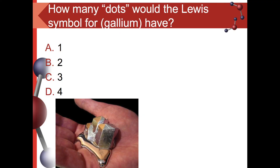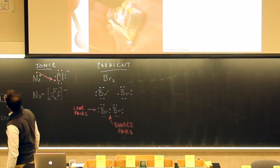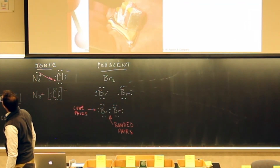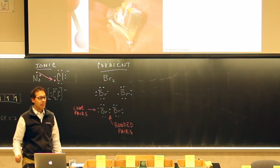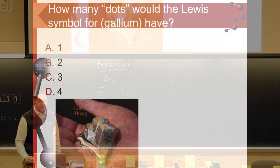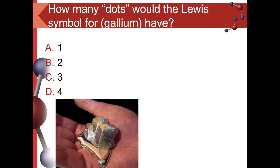Question: how many dots would the Lewis symbol for gallium have? Find gallium — Ga, element number 31.